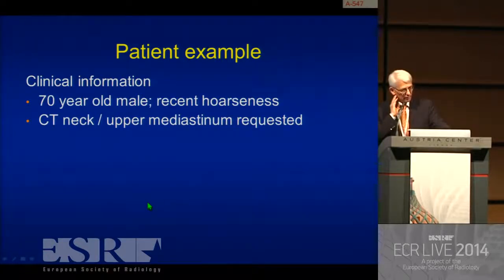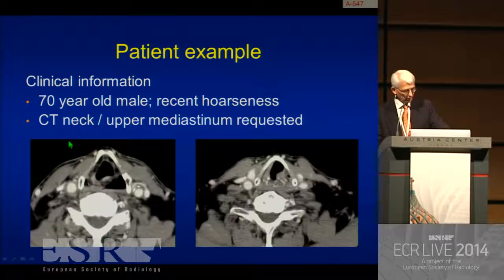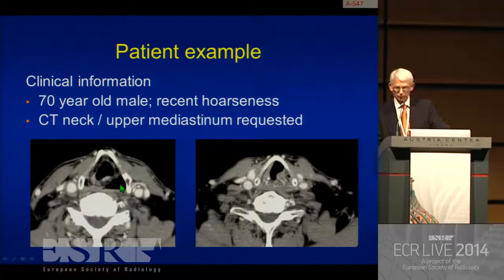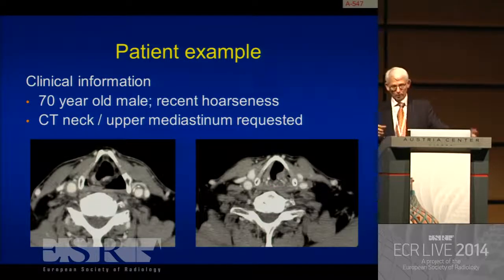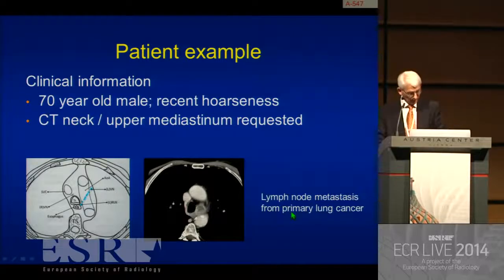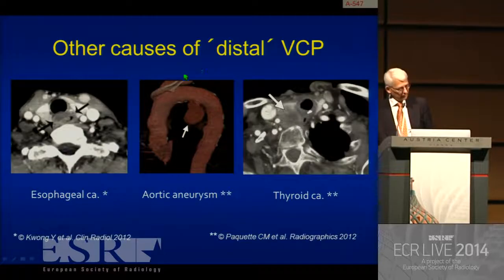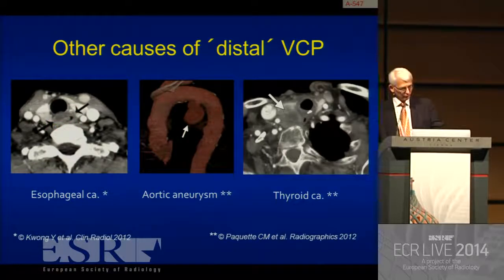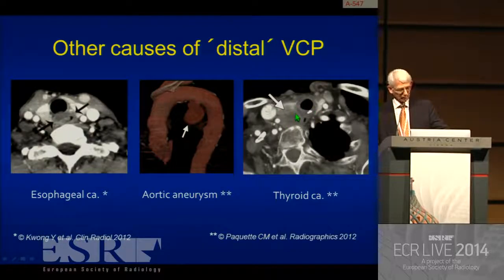A patient example: a 70-year-old gentleman with recent hoarseness. CT of neck and upper mediastinum is requested. At the supraglottic larynx, we see medialization and some thickening of the aryepiglottic fold, dilatation of the piriform sinus, and the sail sign — dilatation of the ipsilateral ventricle. You already know something is happening in those 12 centimeters from the aortic arch to the level of the cord. The lowermost cuts show necrotic lymphadenopathy in the aortopulmonary window — this was a lymph node metastasis from primary lung cancer. Other causes of distal VCP include esophageal carcinoma infiltrating the tracheoesophageal groove, any pathology in the AP window like an aortic aneurysm, and thyroid cancer infiltrating the tracheoesophageal groove.